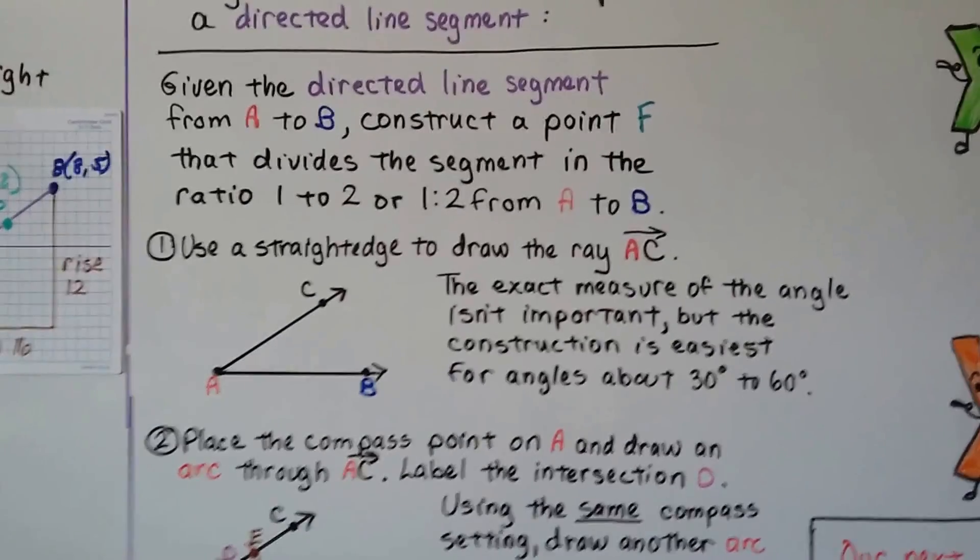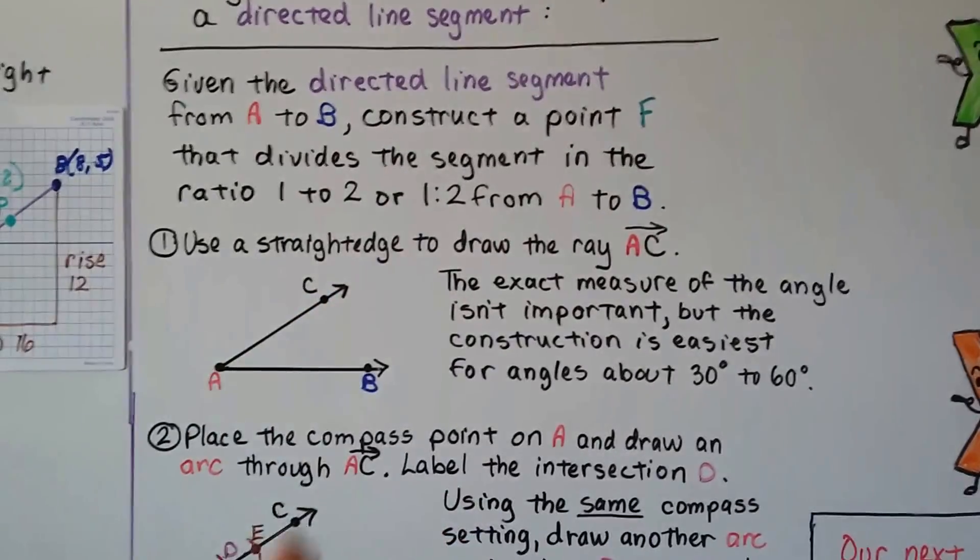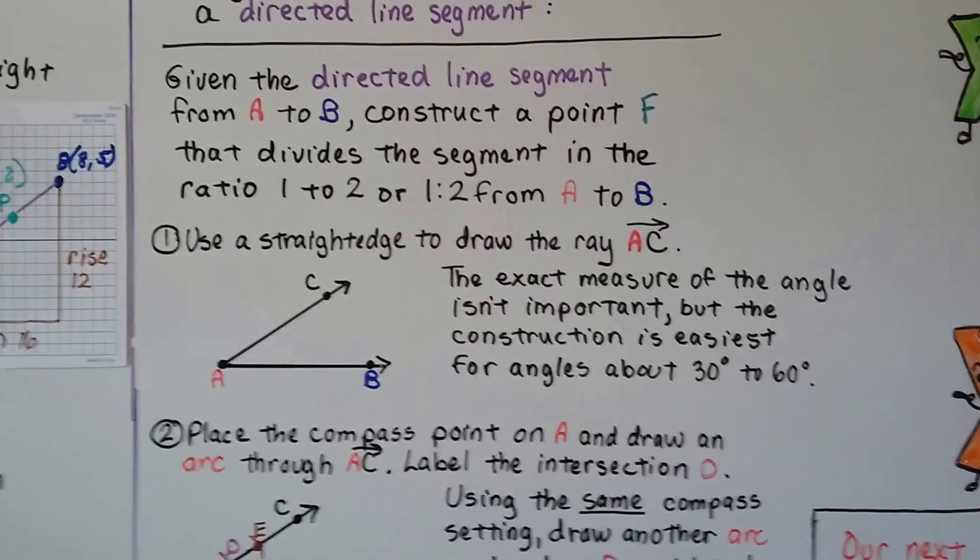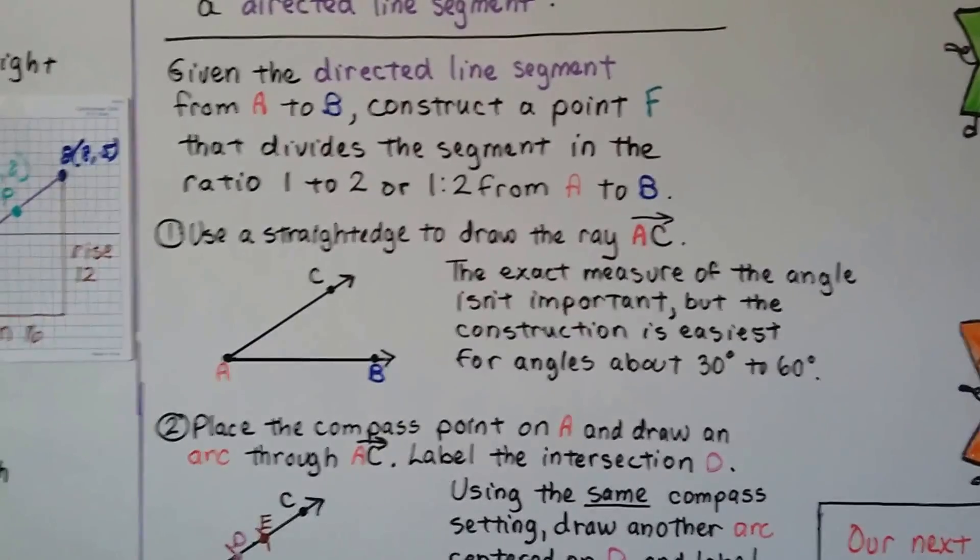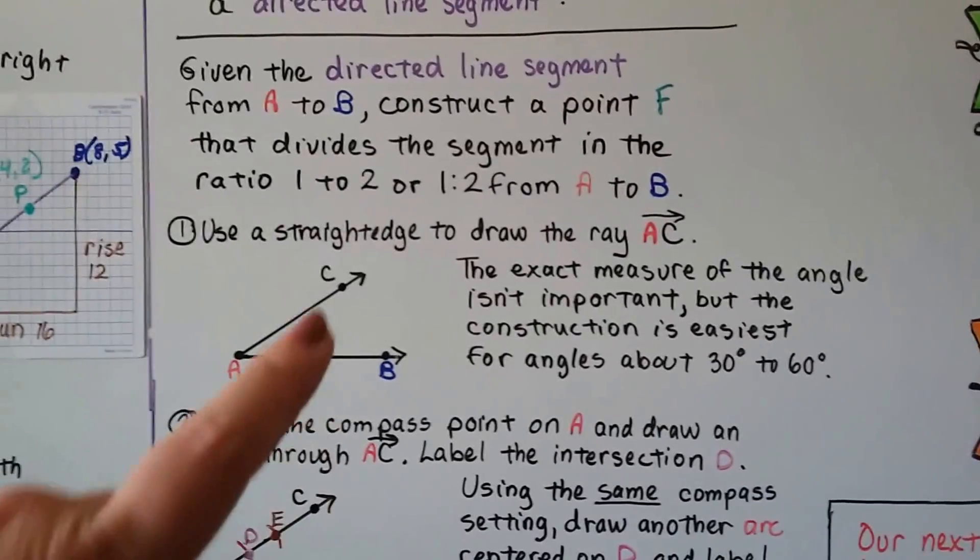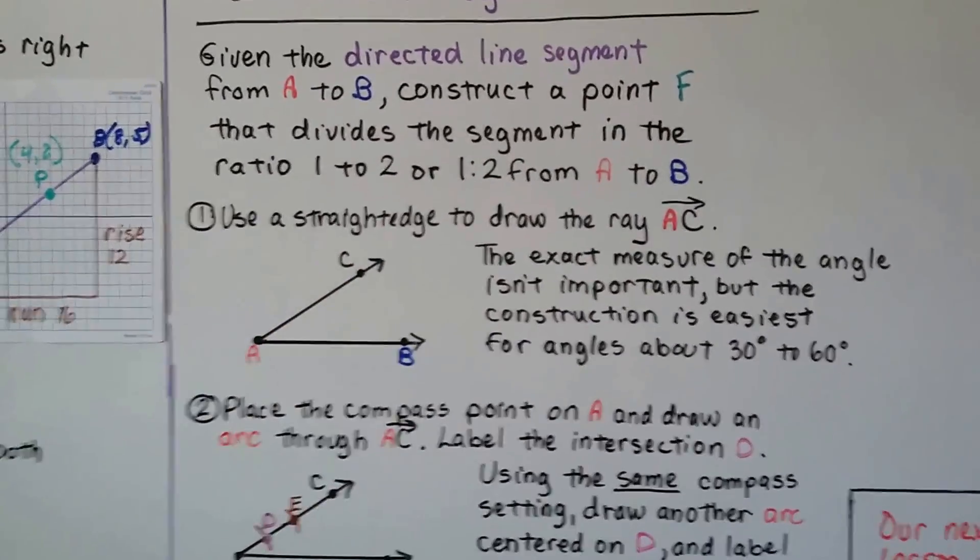We're going to use a straight edge to draw AC. The exact measure of the angle isn't important, but the construction is easiest for angles about 30 degrees to 60 degrees. So try to make your angle between those.